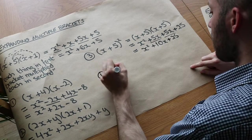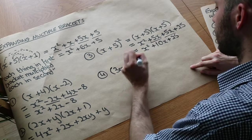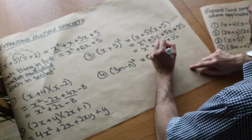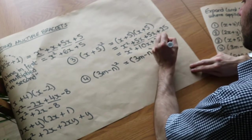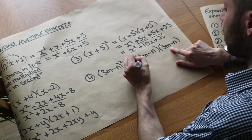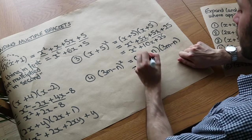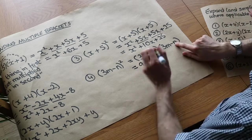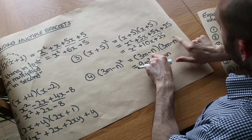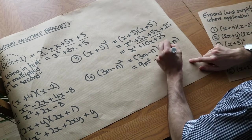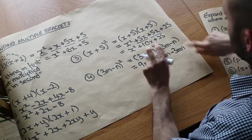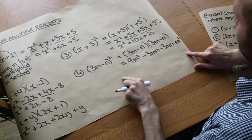Let's do (3m − n) squared. As before, we write it as (3m − n)(3m − n). So 3m times 3m: be very careful — it's not 3m squared, it's 9m squared because 3 times 3 is 9. Then 3m times minus n is minus 3mn. Then minus n times 3m is minus 3mn again. And minus n times minus n: negative times negative is positive, so it's plus n squared.